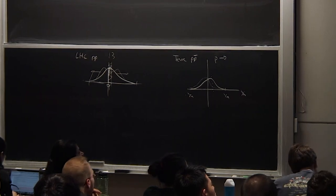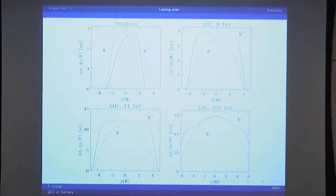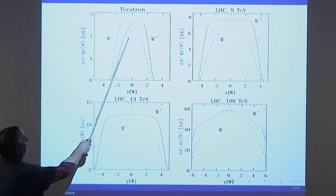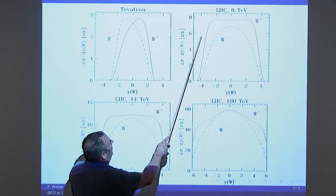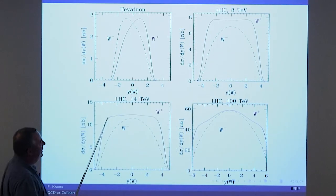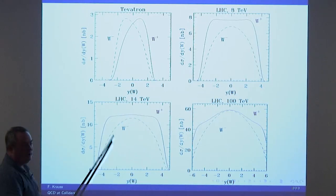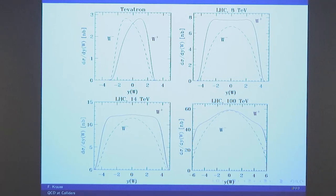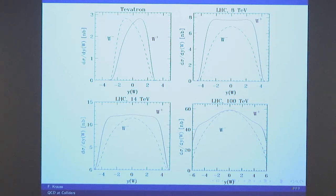Let me show you the plot: W-plus, W-minus, LHC at 7 TeV. You see the W-minus is much more symmetric, because it's much more sea than valence. And you see the difference between W-plus and W-minus — the difference is two U's versus one D. So it helps you fix a lot of information about the PDFs.